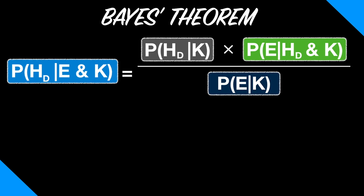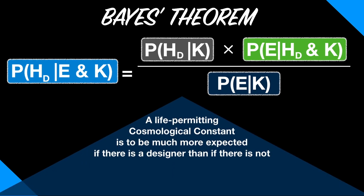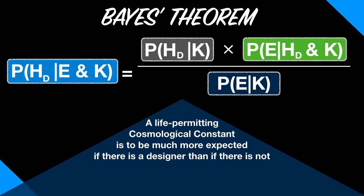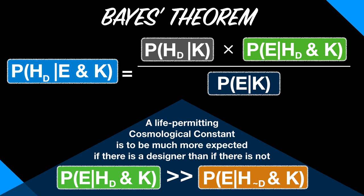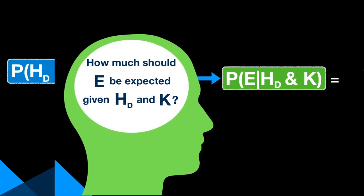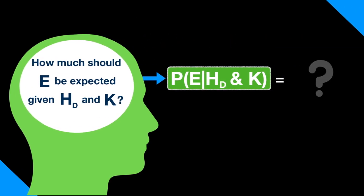The strength of Rhoda's fine-tuning argument lies in the premise that a life-permitting cosmological constant is to be much more expected if there is a designer than if there is not. We can symbolize this premise like this. So, how much should E be expected given the designer hypothesis and K?